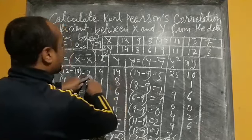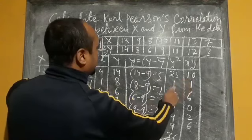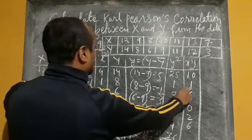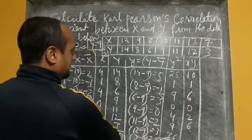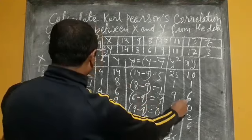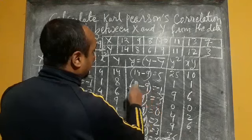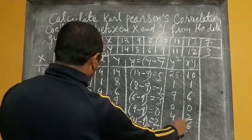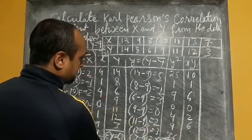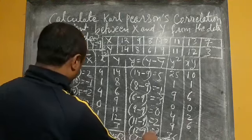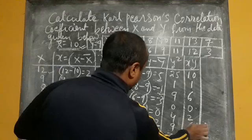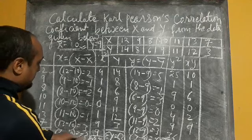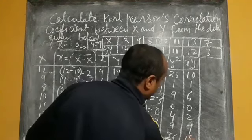Continuing the xy products: 0 × 0 = 0; 1 × 2 = 2; 3 × 3 = 9; minus 3 × minus 6 = 18. Adding all these xy values, summation xy equals 46.